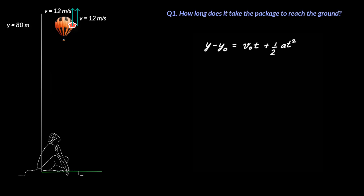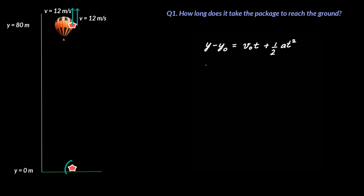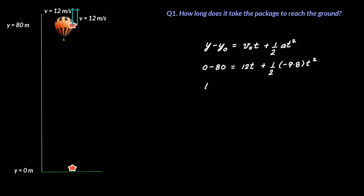Of course, the velocity of the packet would be 0 meters per second if your frame of reference is the hot air balloon itself. Using the equation y − y₀ = V₀t + ½at², we put: 0 − 80 = 12t + ½(−9.8)t², and this gives a value of t = 5.45 seconds.